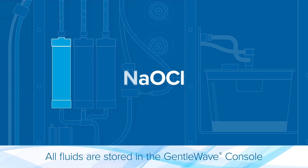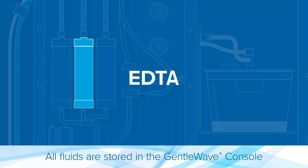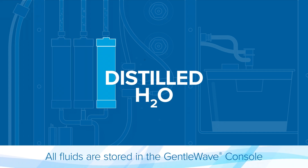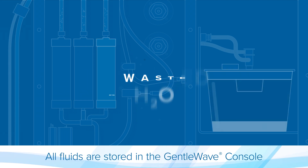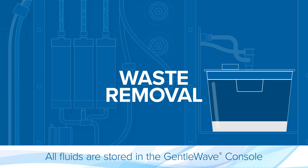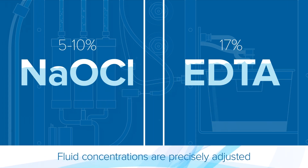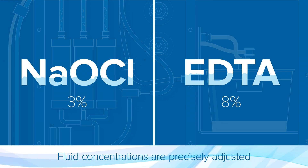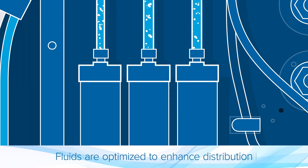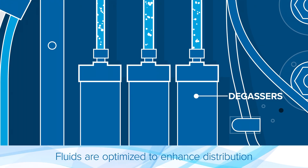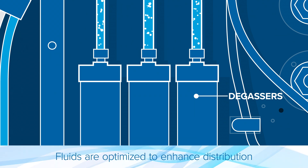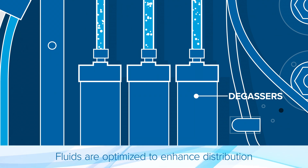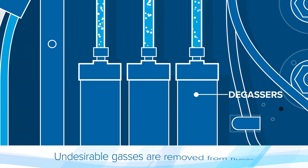EDTA, and distilled water, and has a container for waste removal. The concentration of each fluid is adjusted for precise delivery to the root canal system. Fluids then undergo a degassing process to ensure optimal fluid and energy distribution.